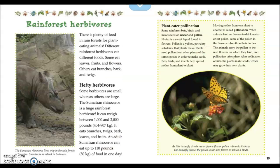There is plenty of food in rainforests for plant-eating animals. Different rainforest herbivores eat different foods — some eat leaves, fruits, and flowers, while others eat branches, bark, and twigs. Some herbivores are small, whereas others are large. The Sumatran rhinoceros is a huge rainforest herbivore, weighing between 1,000 and 2,000 pounds. It eats branches, twigs, bark, leaves, and fruit. An adult Sumatran rhinoceros can eat up to 110 pounds of food in one day. The caption notes that the Sumatran rhinoceros lives only in the rainforest of Sumatra, an island in Indonesia.